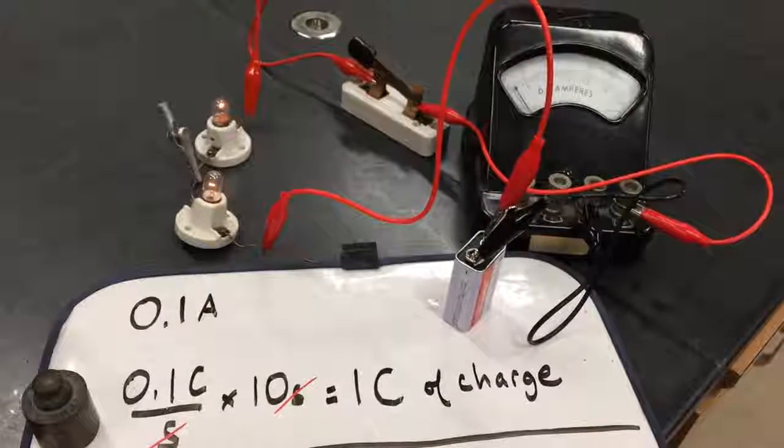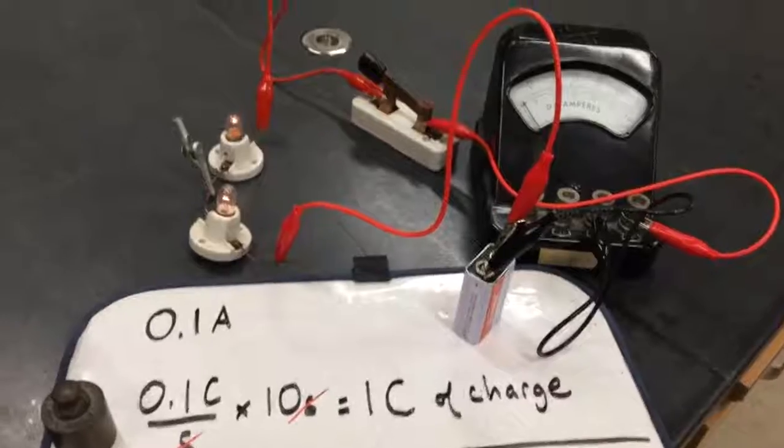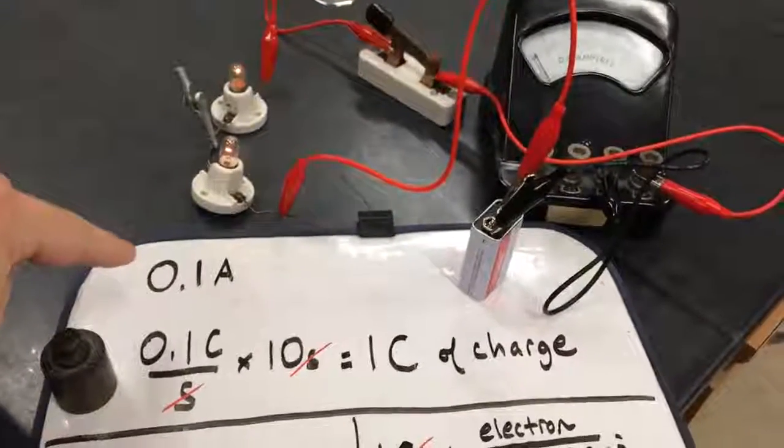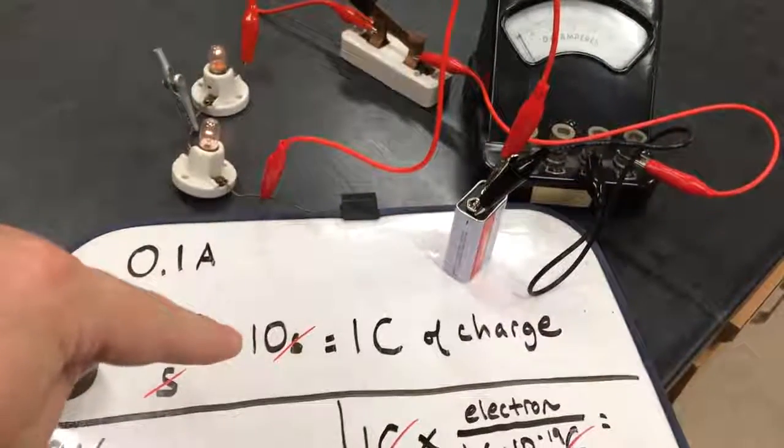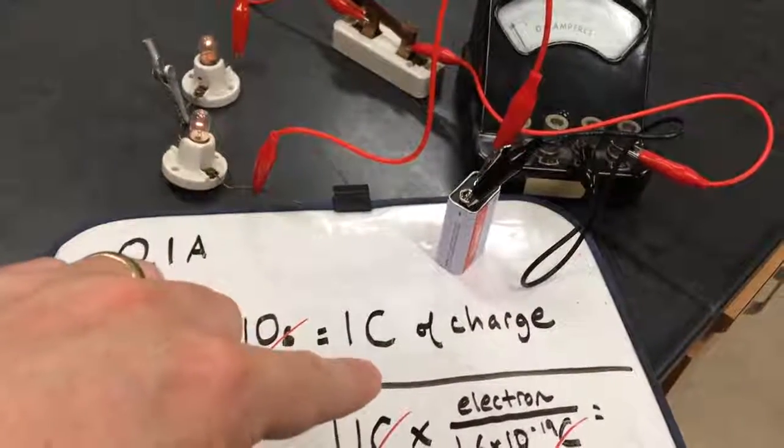So our ammeter told us we had 0.1 amps, which is the same as 0.1 coulombs per second. And since we waited 10 seconds, that means we got a coulomb of charge.